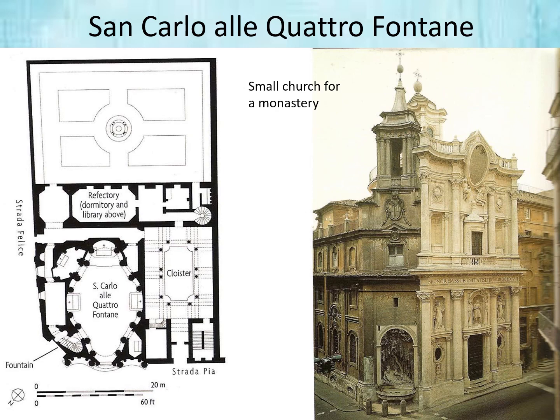The floor plan includes surrounding structures, showing this is very much a small church that was part of a monastery. You can see the cloister, dormitory, and library. There is also a fountain. This is kind of a smaller component of a functional larger space—not a large space in general, but a small feature within it.